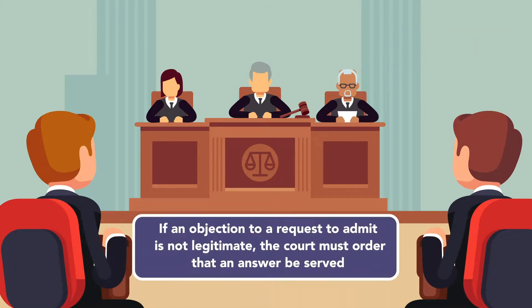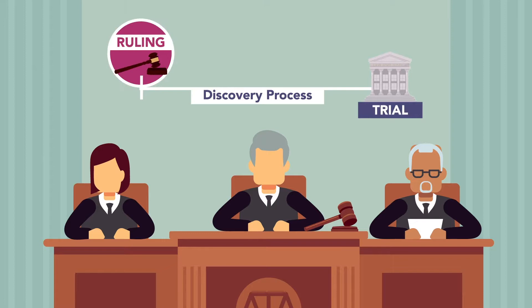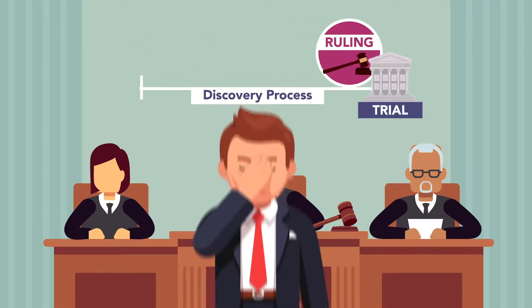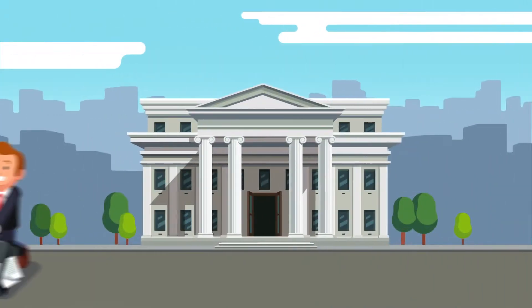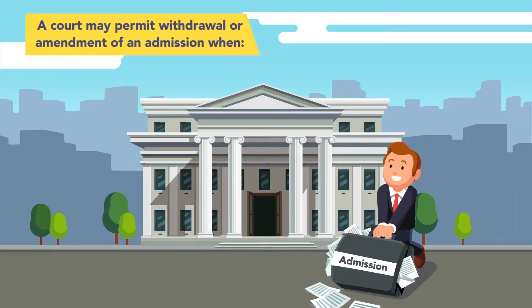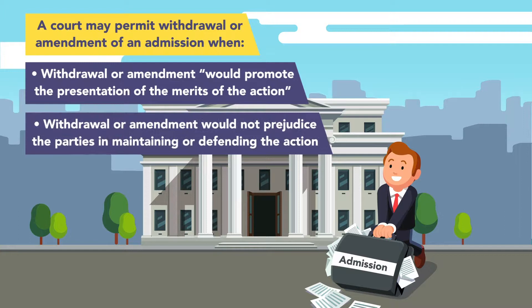If an objection to a request to admit is not legitimate, the court must order that the answer be served. The judge can also defer ruling on an objection until later in the discovery process or even until trial, but unnecessary delays in resolving discovery matters may result in the parties wasting time, energy, and resources investigating the disputed issue. A party can retract an admission if the court allows it. A court may permit withdrawal or amendment of an admission when it would promote the presentation of the merits of the action and would not prejudice the parties in maintaining or defending the action.